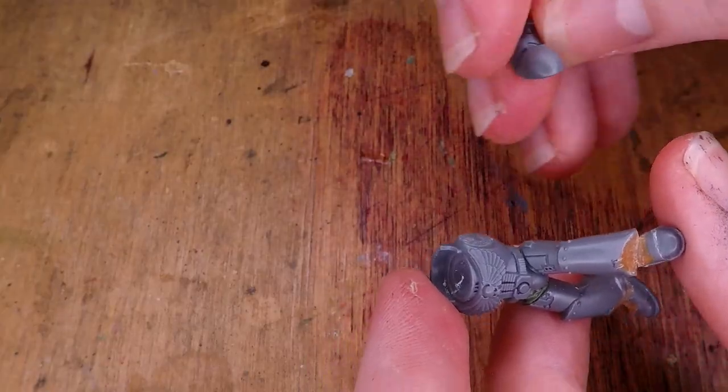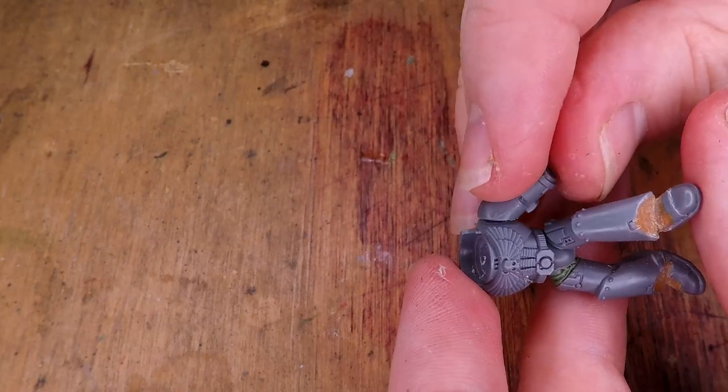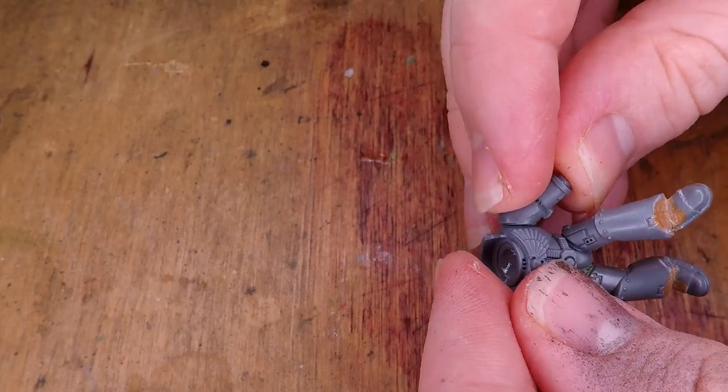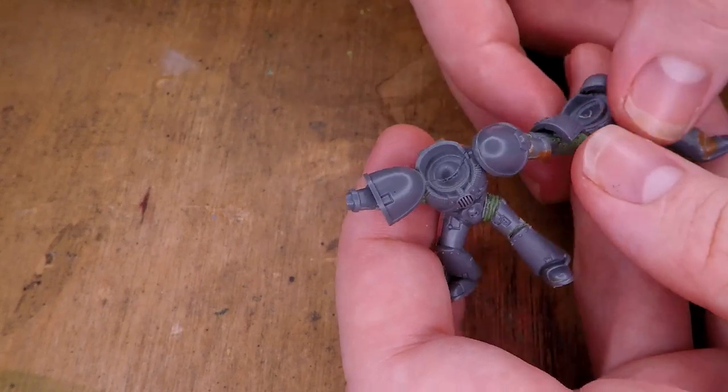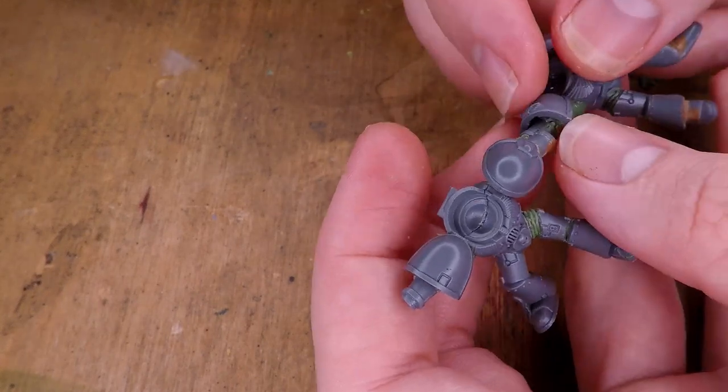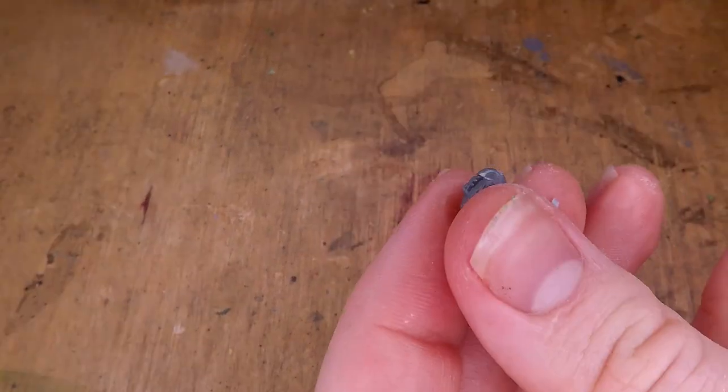I then add the other arm for the other figure that we are making. And then, although I forgot to film it, I take some green stuff and I attach the arm that was attached to the other figure and kind of connect everything together.